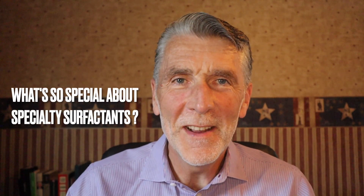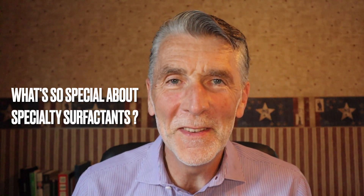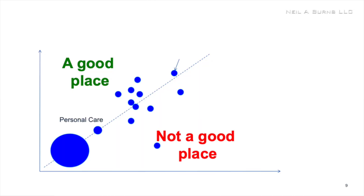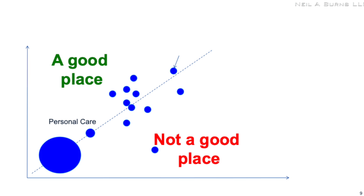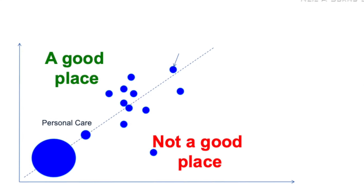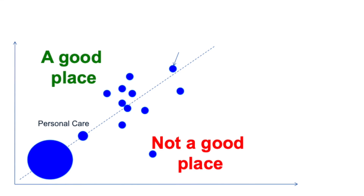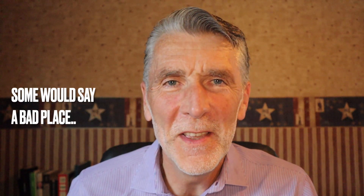I often get asked: what makes a specialty surfactant, and how is that different from a commodity surfactant? Because everybody loves specialties and no one wants to be involved with commodities. Well, that comes down to this graph — a very simple two-axis graph. There's a good place to be on the graph and there is not a good place to be on the graph. In a future edition of this surfactant capsule series, we'll talk about how to get yourself in the good place.